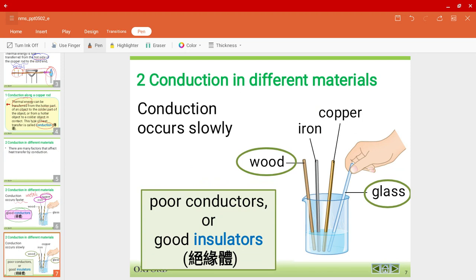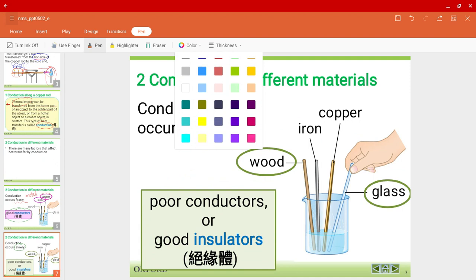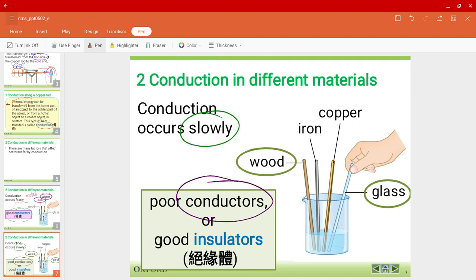On the other hand, when conduction occurs slowly, we would say that they are poor conductors or we would say they are good insulators. For example, we have wood and glass. They are poor conductors or we could say they are good insulators.